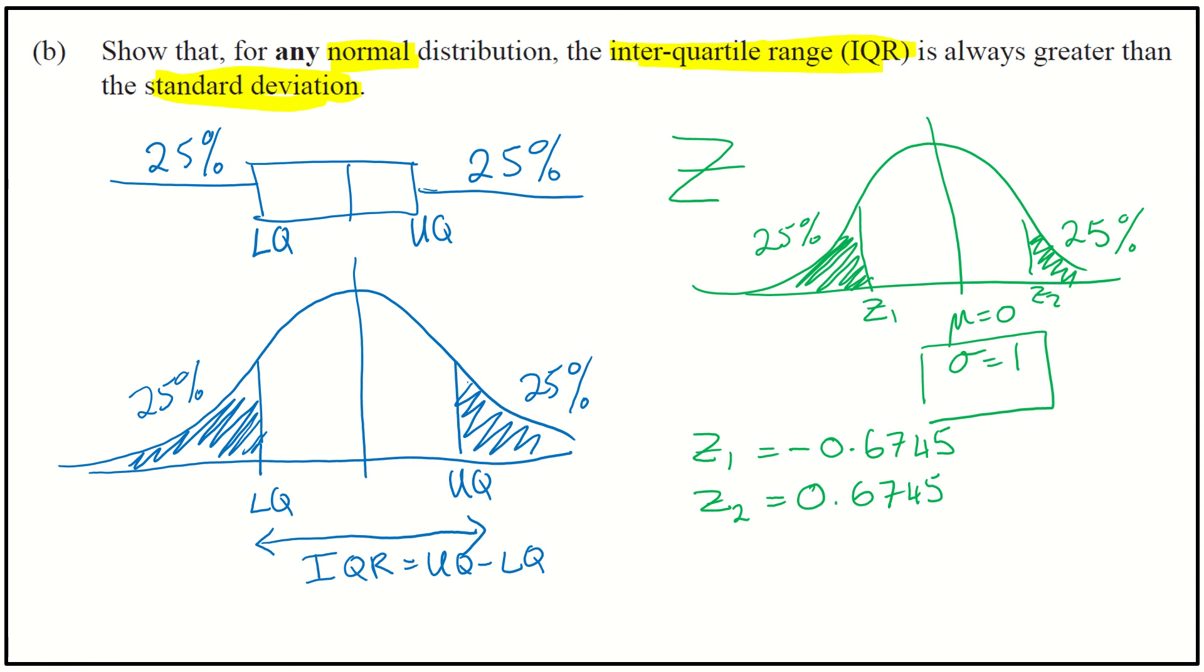So going back to here, I need to now connect that back to the idea of my interquartile range, being upper quartile minus lower quartile. So I want to find that interquartile range. And so I'm going to do my upper quartile, which is the Z2 value. So 0.6745. And I'm going to subtract the lower quartile, which is negative 0.6745.